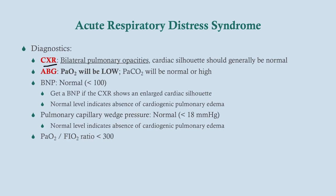On chest X-ray you'll see bilateral pulmonary opacities with a generally normal cardiac silhouette — you're not going to see a big massive heart as you would with cardiogenic pulmonary edema. On ABGs, PaO2 will be low because you're not exchanging gas; you may also have hypercapnia. If you get a BNP, it will be normal in ARDS — if it's elevated, suspect cardiogenic pulmonary edema. The pulmonary capillary wedge pressure will also be normal, and the PaO2 to FiO2 ratio will be less than 300.